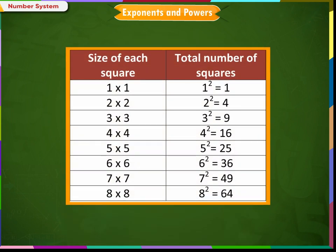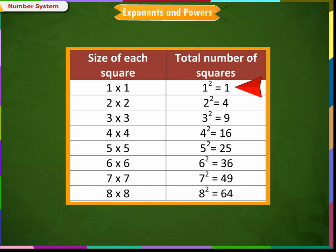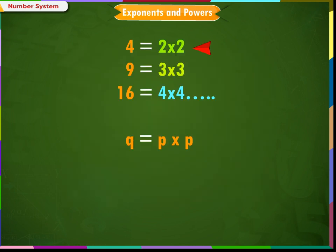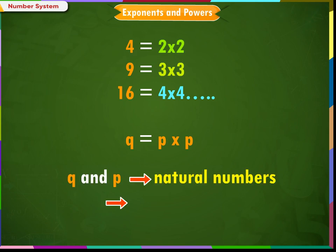Let us observe the tabular column closely. Note that the numbers 64, 49, 36, 25, 16, 9, 4 and 1 are obtained by multiplying the number by itself. Such numbers are called square numbers. We have seen that 4 = 2 × 2, 9 = 3 × 3, 16 = 4 × 4 and so on. Continuing this pattern, we can generalize that Q = P × P, where Q and P are natural numbers. Q is known as the square number.